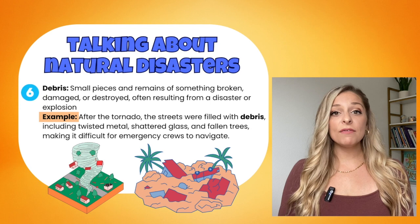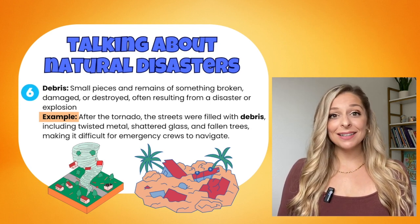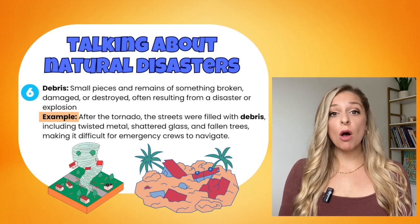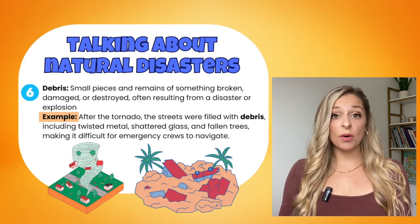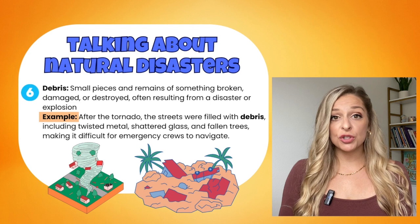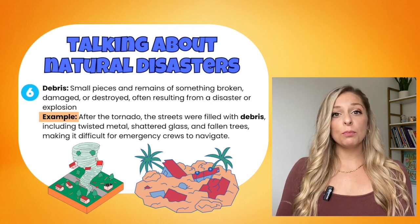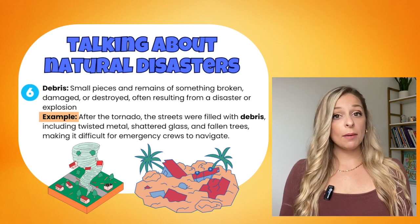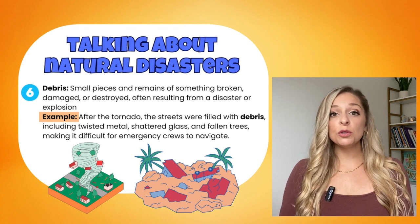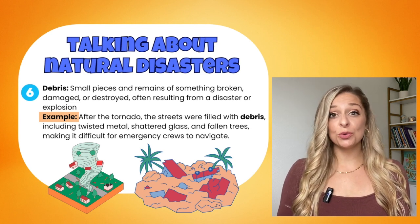Similar to rubble, we have number six: debris. The S is silent in this word. Debris refers to small pieces and remains of something broken, damaged, or destroyed, often resulting from a disaster or explosion. The difference between rubble and debris is that rubble is more about broken buildings, whereas debris can be broken pieces of anything. For example: after the tornado, the streets were filled with debris, including twisted metal, shattered glass, and fallen trees, making it difficult for the emergency crews to navigate.